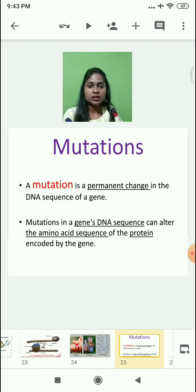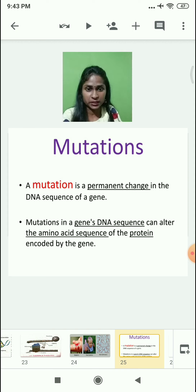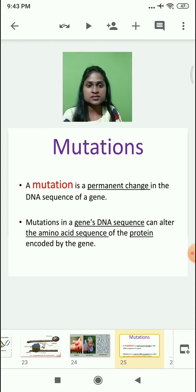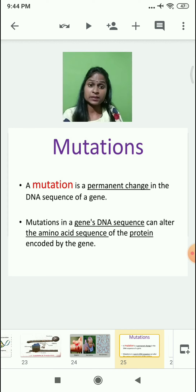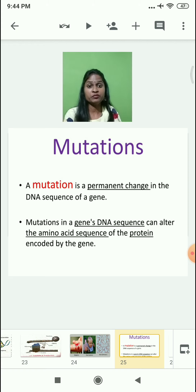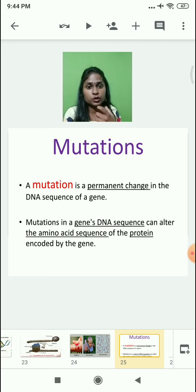A mutation is nothing but a permanent change in the DNA sequence of a gene. When a zygote is formed from the sperm cell and egg cell during fertilization, if a mutation occurs, these changes are transferred from parents to offspring. Sometimes mutations are good and sometimes mutations are bad, as we have seen in the examples of sickle cell anemia and Down syndrome — these are examples of mutation where the DNA structure has been completely changed due to wrong protein synthesis.